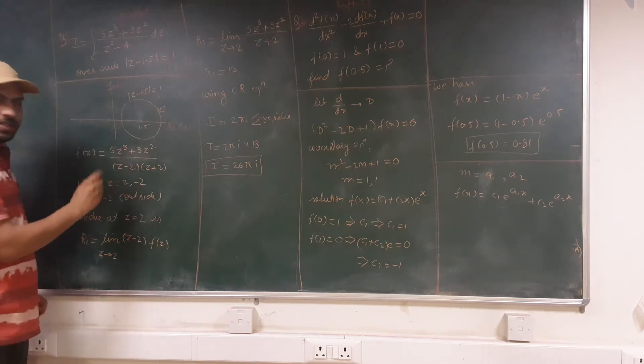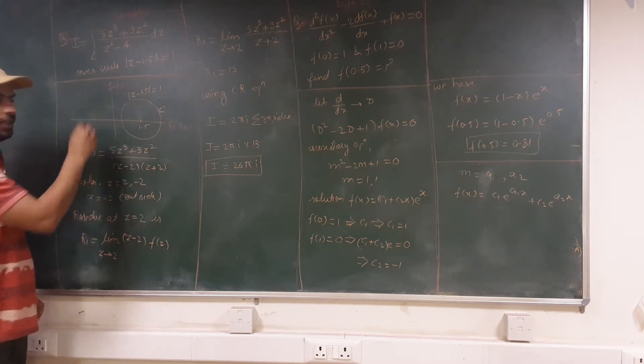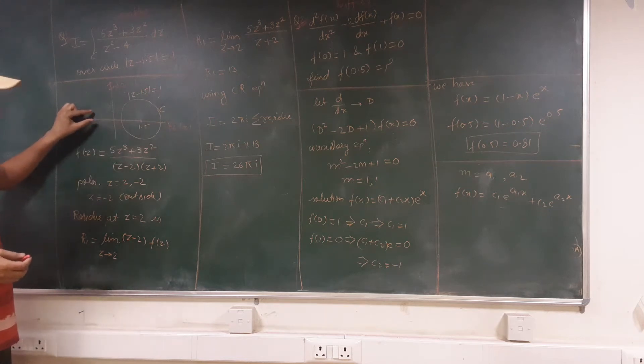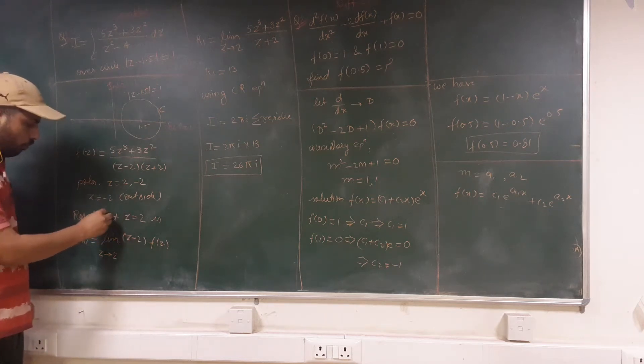Out of these poles, you can see that z = -2, that is the point here is outside this circle. So we can ignore this point. We will just include the pole at z = 2.